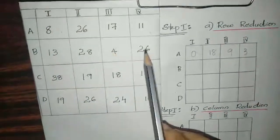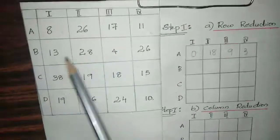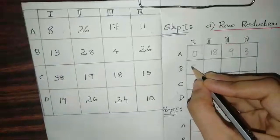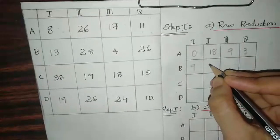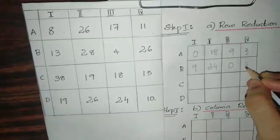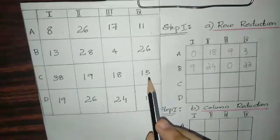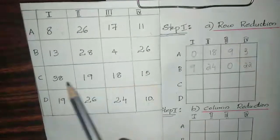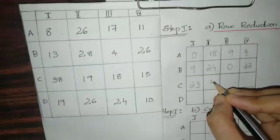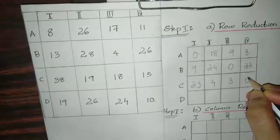For the second row, the minimum value is 4. So: 13−4=9, 28−4=24, 4−4=0, 26−4=22. For the third row, the minimum value is 15. So: 38−15=23, 19−15=4, 18−15=3, 15−15=0.